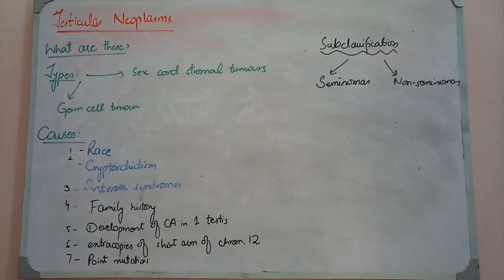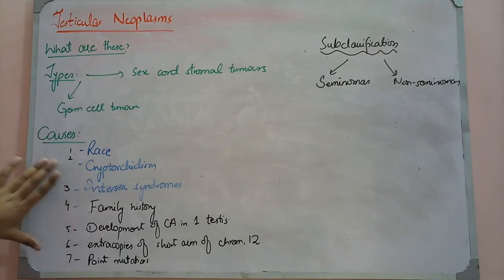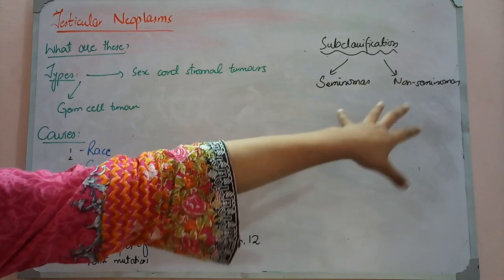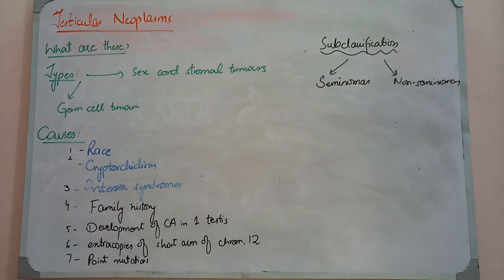This is the most important topic of male genital system. If you have a question in the male genital system, there will be an 80% chance that it will come. The most common repeated questions come from this — sometimes they ask causes, which are the testicular neoplasms; sometimes they ask the types; most often they ask about seminomas, non-seminomatous tumors, tumor markers, morphology, and differences. The prostate is also very important, with an ACQ probability of 80%.